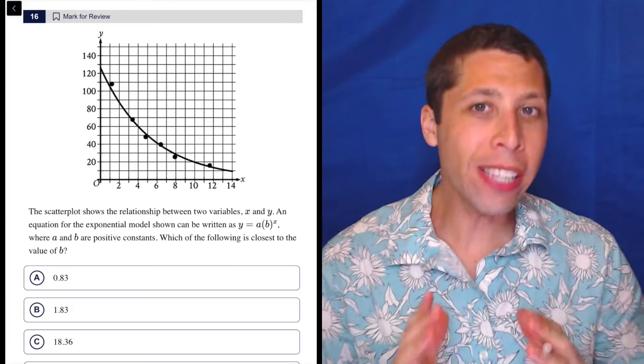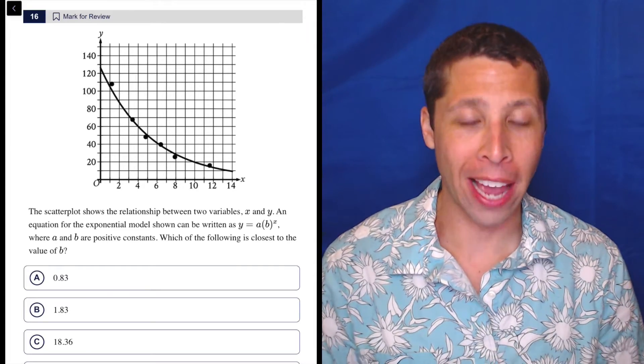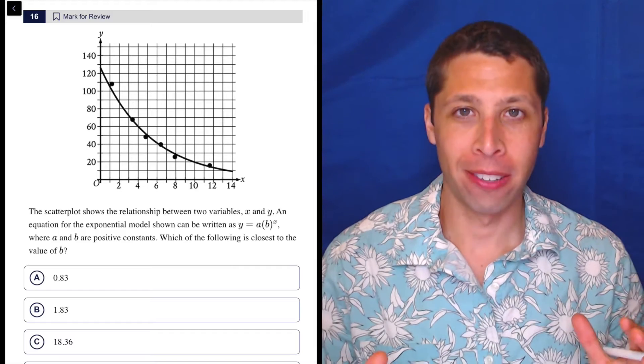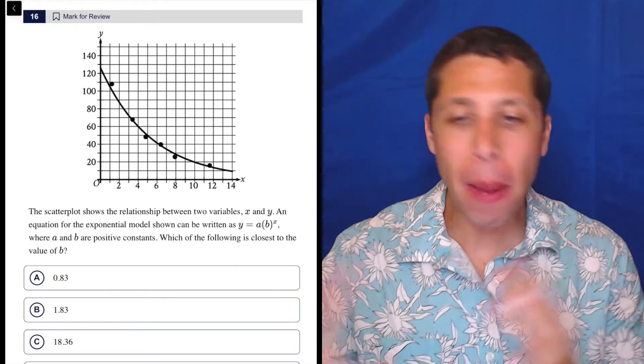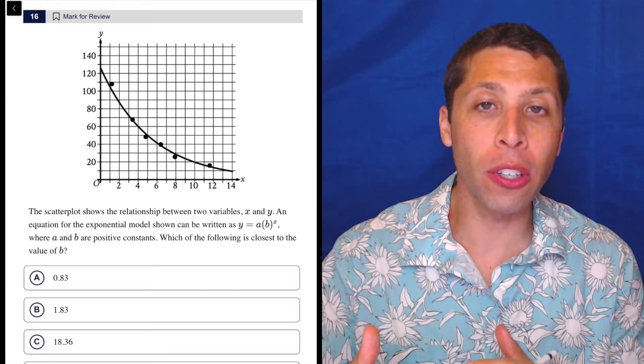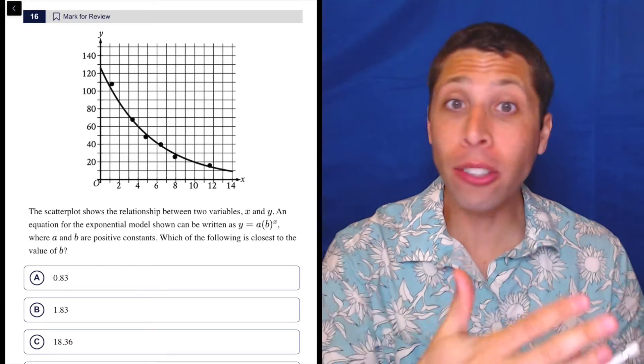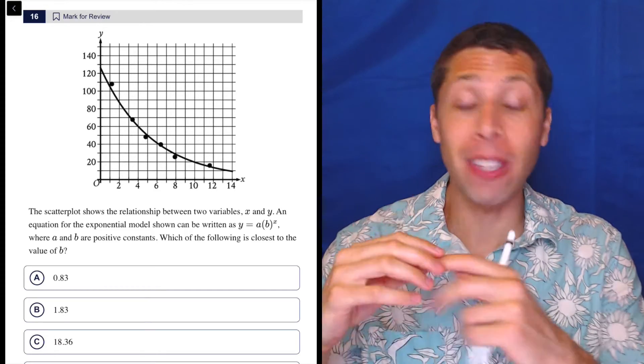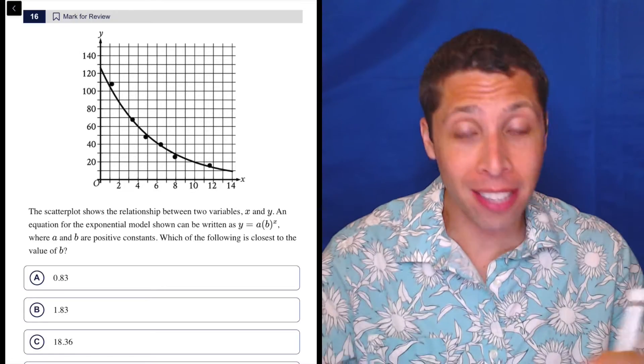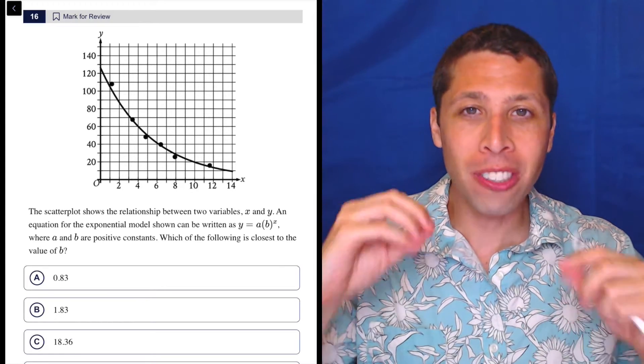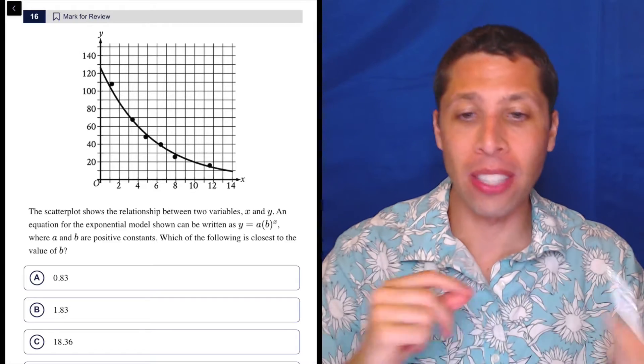All right, let's start off with one really important idea for scatterplots. The dots don't matter. Sometimes they might, there might be a question where they do, but when they're asking for an equation that models whatever the line is, even if sometimes there's no line but there are dots, it's your job to draw the line. You're still not worried about the specific dots.